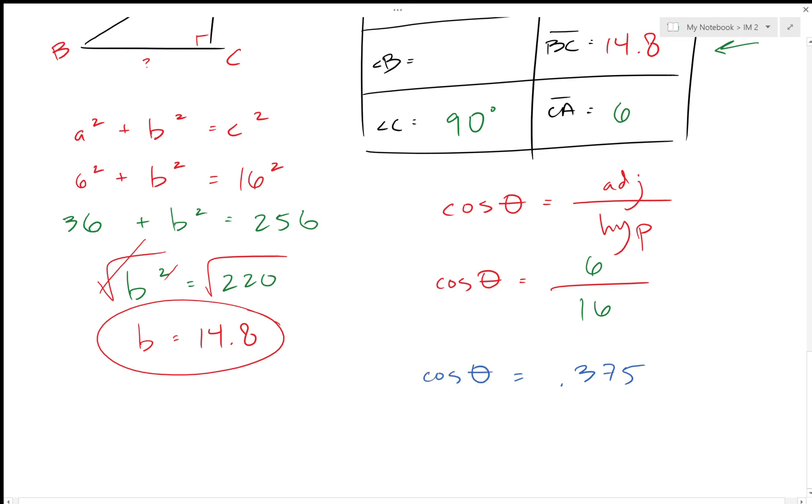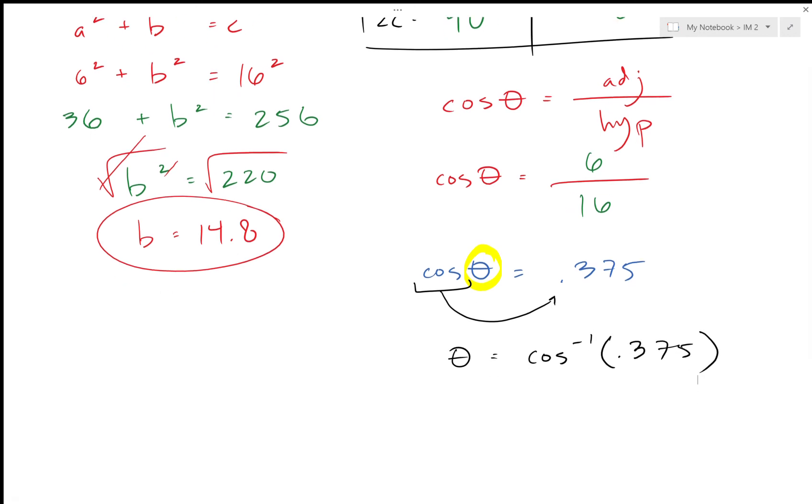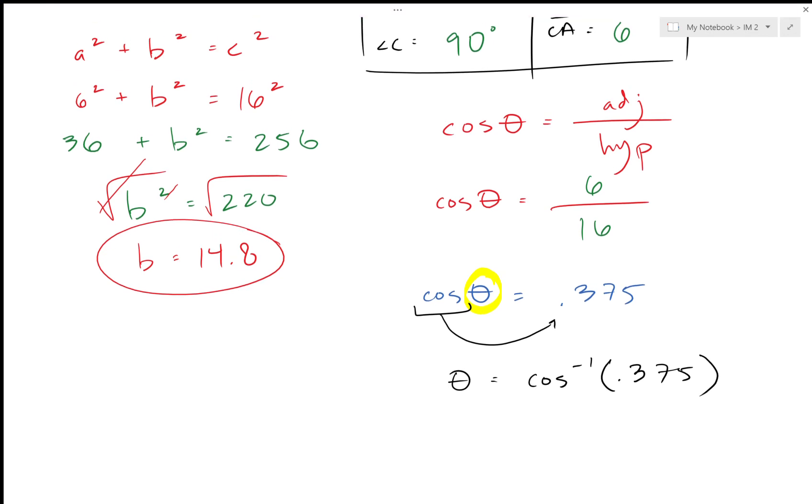Cosine theta—and remember theta is my letter. I want to get theta by itself, so I need to move this cosine part. But moving cosine to the other side, remember, makes it the opposite or the inverse. So cosine inverse of 0.375, so now I have to use that special button on the calculator, the cosine inverse.